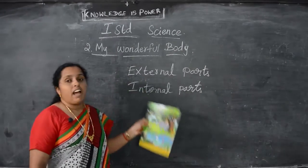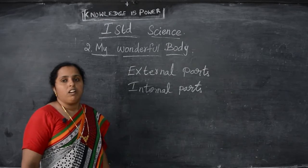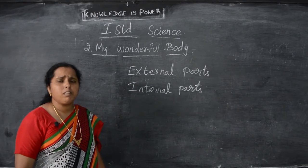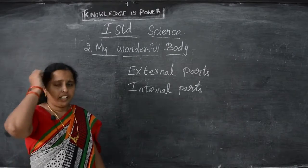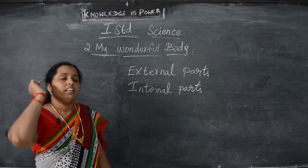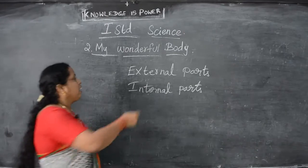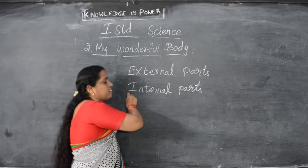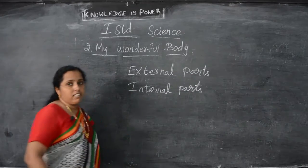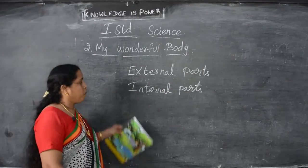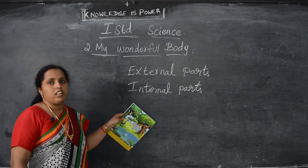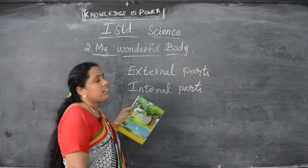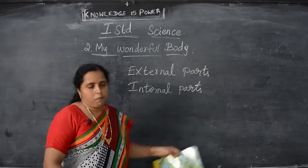Whereas eyes, nose, ears, fingers, hands, legs, head, hair — these parts we can see, that is external parts. We cannot see some parts: that is heart, lungs, kidney. These parts are all internal parts.